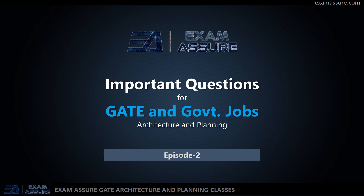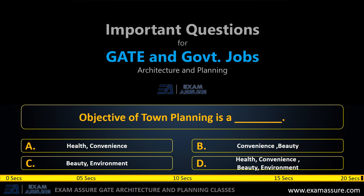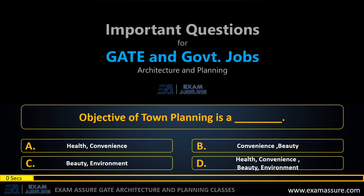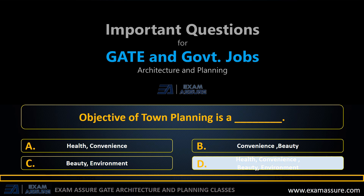Hello everyone, welcome back to Exam as Your YouTube channel. This is the second episode in the series of important questions for GATE and government job related to architecture and planning. Question number one: the objective of town planning is — option A: health and convenience, option B: convenience and beauty, option C: beauty and environment, option D: health, convenience, beauty and environment. The correct answer is option D: health, convenience, beauty and environment.